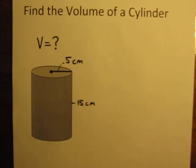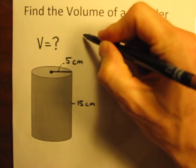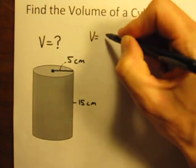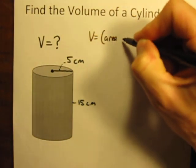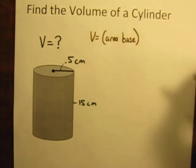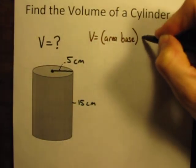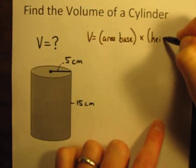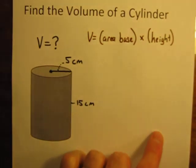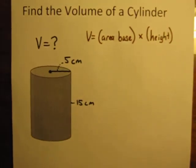When you calculate the volume of a cylinder, the formula is actually very similar to the formula for the volume of a prism, which I did in a previous video. But the formula is going to start out just like this: the volume is equal to the area of the base times the height.